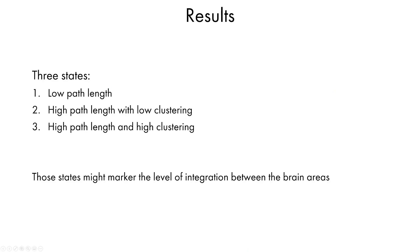In general, the clusters could be described as representative of three different states: first, low path length; second, high path length and low clustering; and third, high path length and high clustering. We believe these states indicate the dynamics of integration between different brain areas, although details may vary. The most important topological characteristics for the graphs were path length, clustering coefficient, and betweenness centrality.